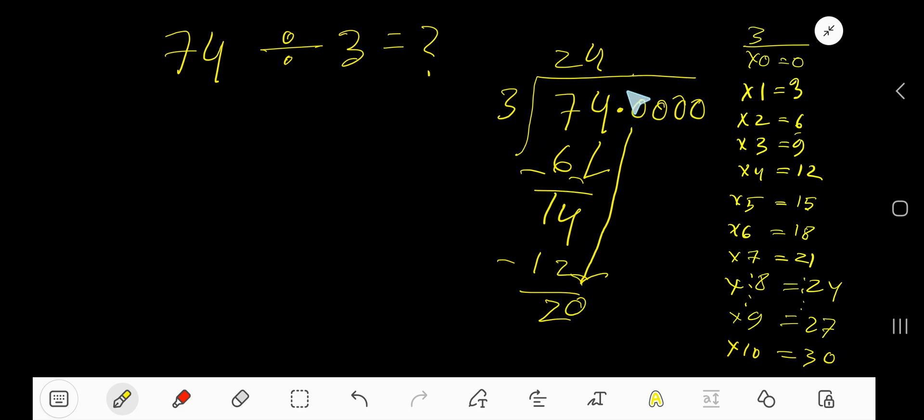Before the zero there is a decimal. The decimal must come to the quotient directly. 3 goes into 20 how many times? Look, 8 times 24, 7 times 21, which is greater, so 6 times. Write 6. 6 times 3 is 18.